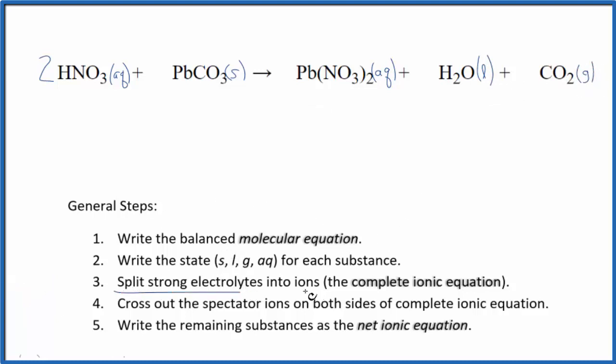Next, we split the strong electrolytes into their ions for the complete ionic equation. Hydrogen on the periodic table is in group 1, has a 1 plus ionic charge. And the whole nitrate is just 1 minus. So we have two hydrogen ions, 2H plus, and I'll write aqueous at the end. Two of these nitrate ions, NO3 minus, plus...